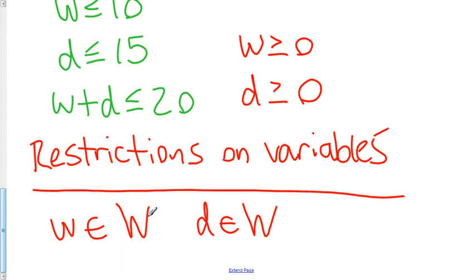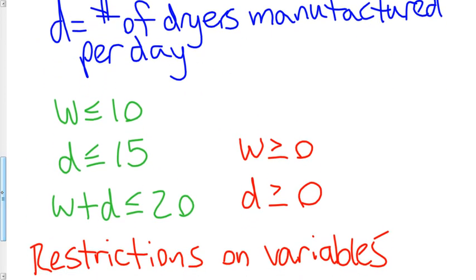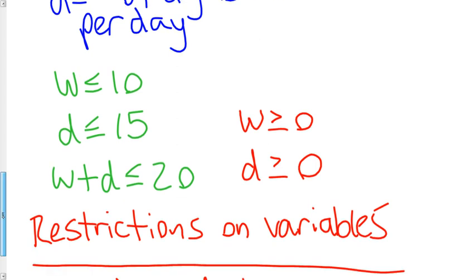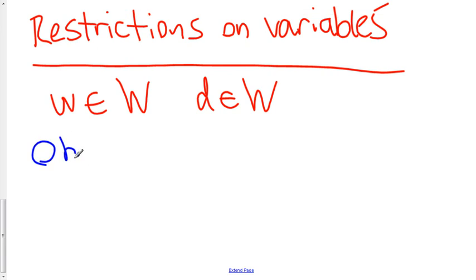So essentially we've modeled this problem. There's only one last thing left to do. What we have is our variables well defined and we have a system of linear inequalities that we could graph as the first step to help us solve this optimization problem. The very last thing we need for this optimization problem is something called an objective function.